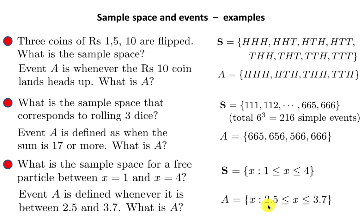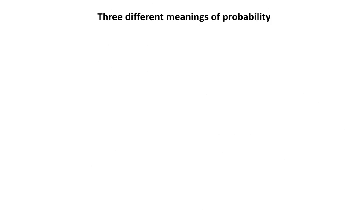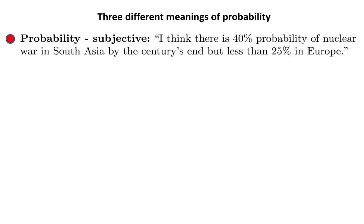Now that we have a clear understanding of the sample space as being a set and events being a subset of the sample space, we can go on to discuss probability. Probability can be given three different meanings. One of these is a very subjective one — it's an opinion. That opinion might be that there is a 40% probability of nuclear war in South Asia by the century's end, but less than 25% in Europe. Of course, nobody really knows; nobody can calculate. This is just an opinion.